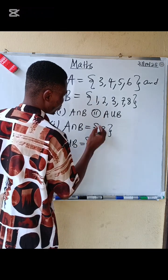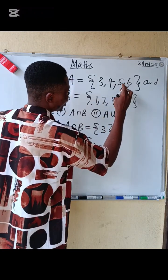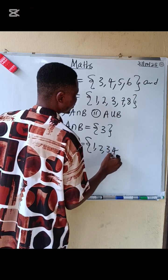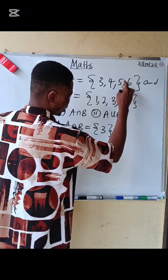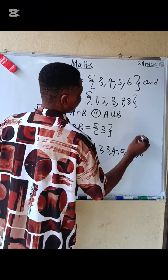Combine. We have 1, 2, 3, then we have 4, we have 5, we have 6, we have 7, we have 8.